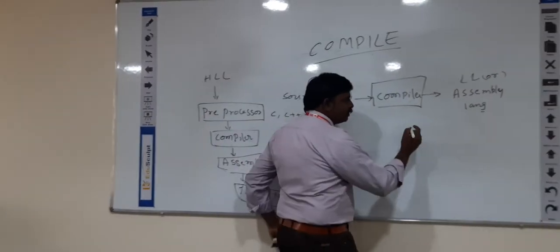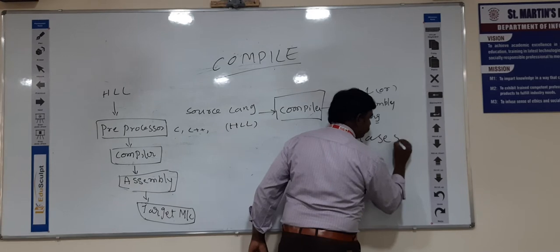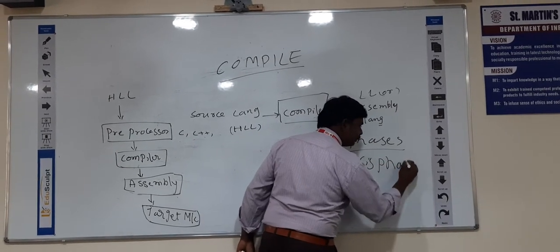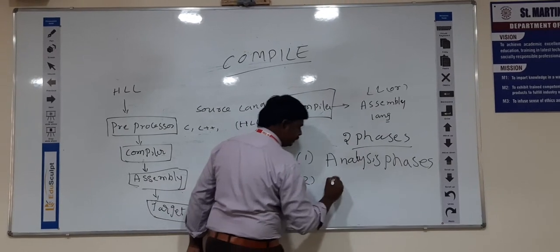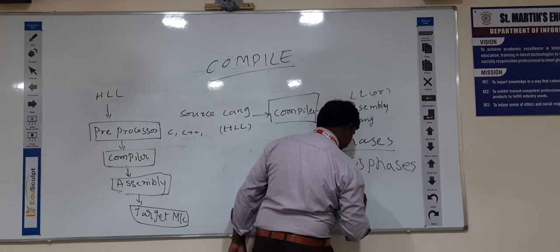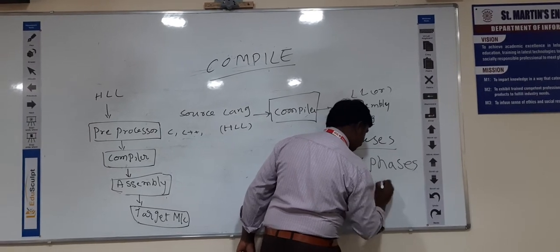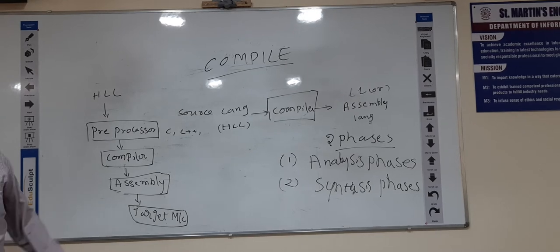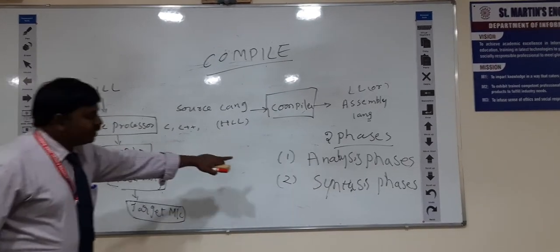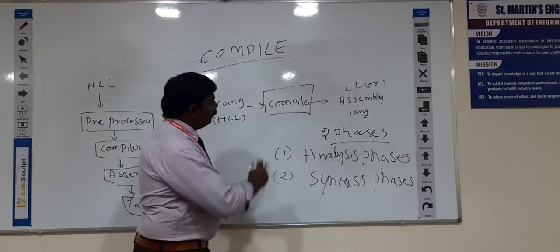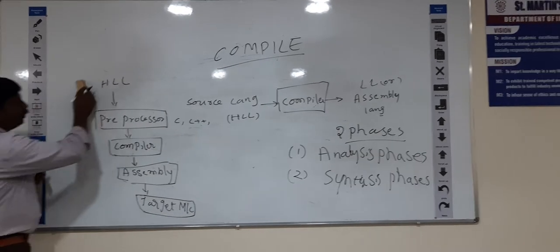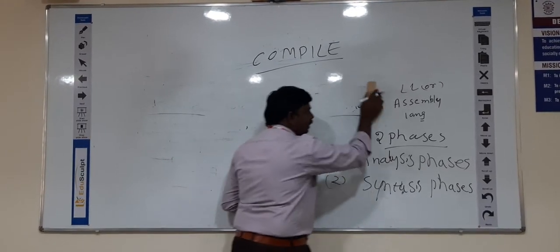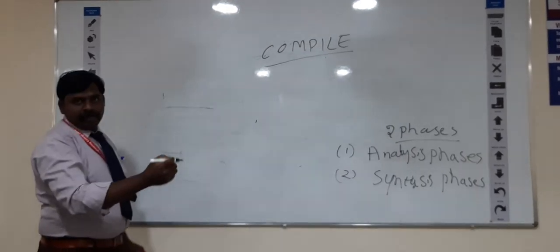So before going to the compiler, it has two types of phases. Basically, the first one is the analysis phase and the second one is the synthesis phase. The compiler has six phases to convert all the source program from high-level to machine-level program.